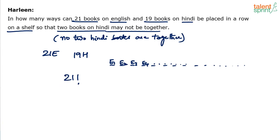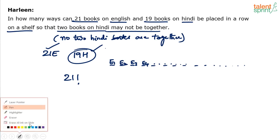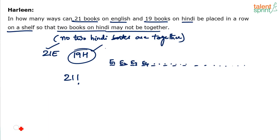Now we arrange the Hindi books. The 21 English books have been placed. We need to count all the places where the Hindi books can go, given that they must not be together. Hindi books can go in the gaps between English books, plus at the two extremes — extreme left and extreme right. I'll use a different color to indicate those positions.